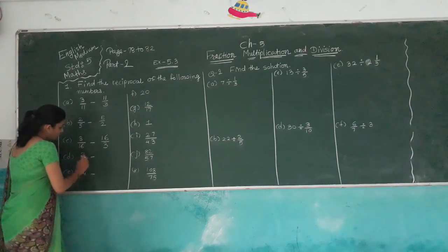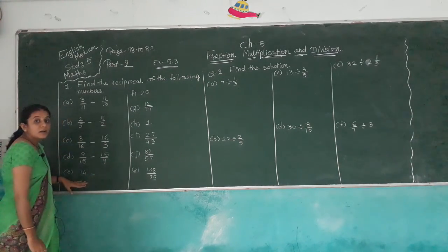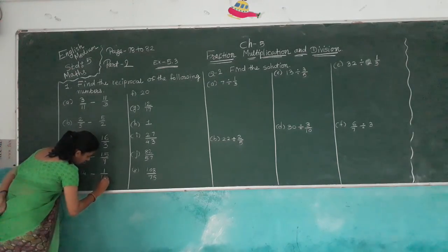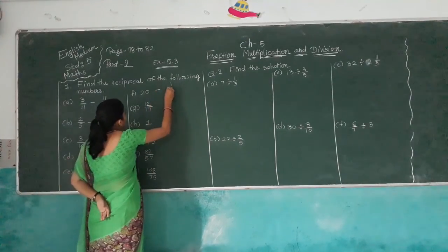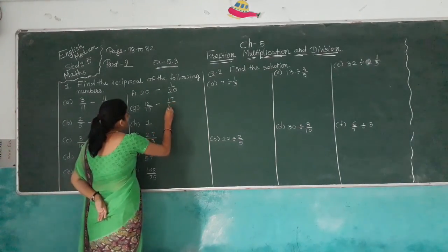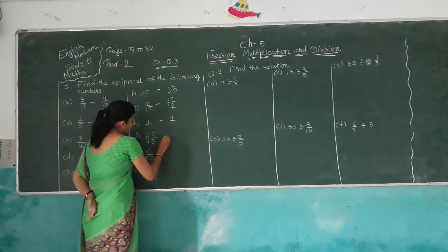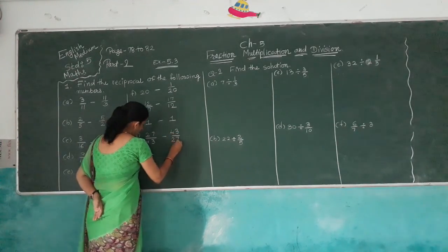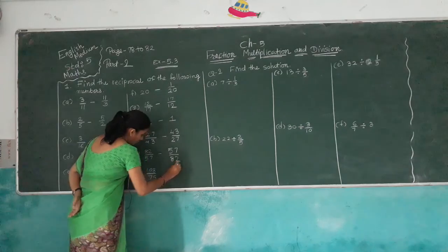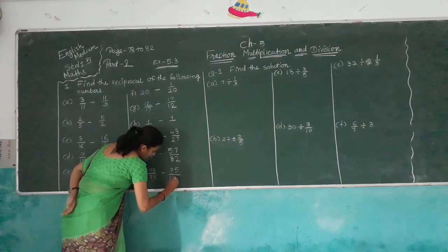Reciprocal of 9/15 is 15/9. For the whole number 14, write it as 14/1, so the reciprocal is 1/14. Reciprocal of 20 is 1/20. Reciprocal of 12/17 is 17/12. Reciprocal of 1 is 1. Reciprocal of 27/43 is 43/27. Reciprocal of 82/57 is 57/82. Reciprocal of 108/75 is 75/108.